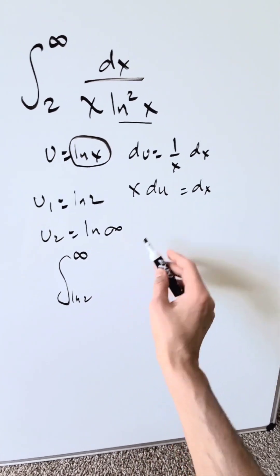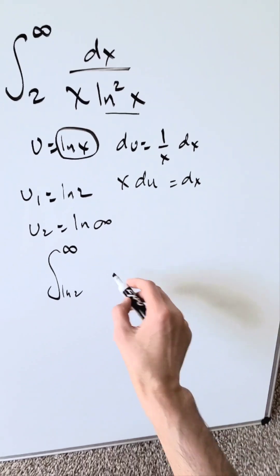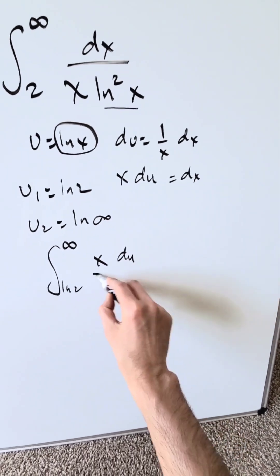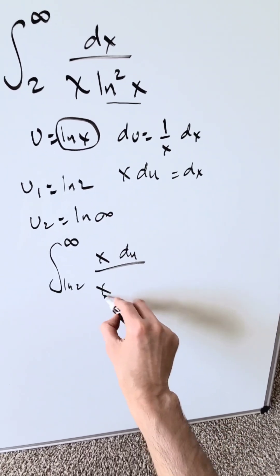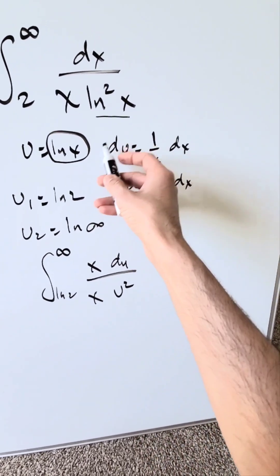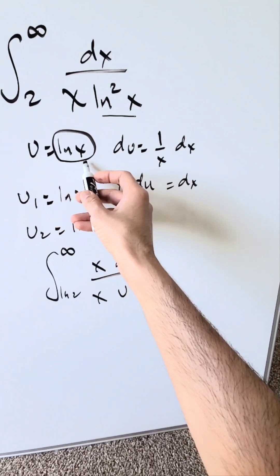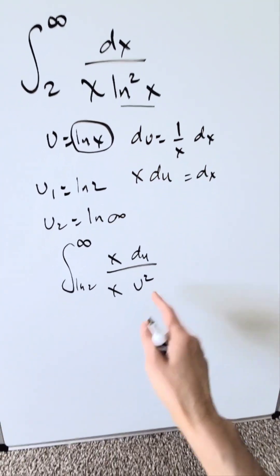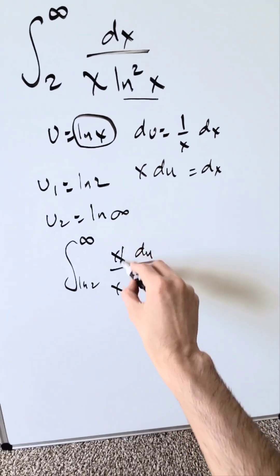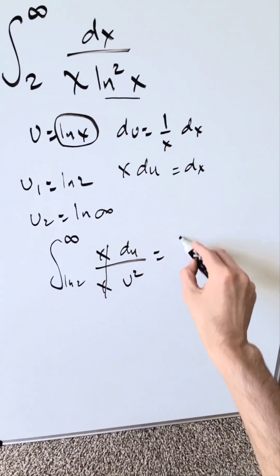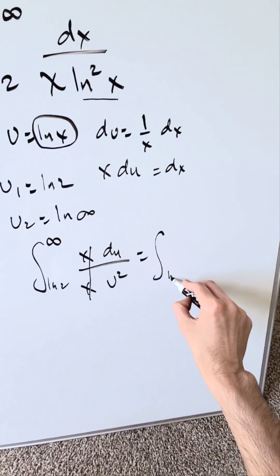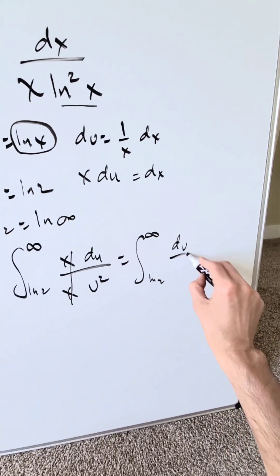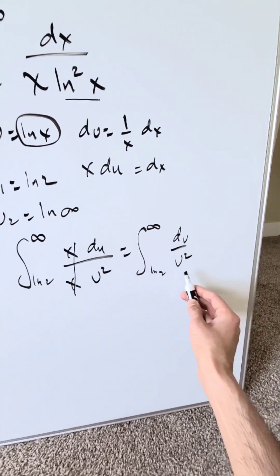Plugging in the substitutions: x du divided by x u squared, because u equals ln x, so ln squared x becomes u squared. The x's cancel out, leaving the integral from natural log 2 to infinity of du over u squared.